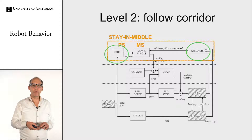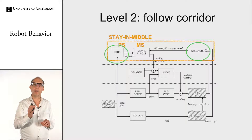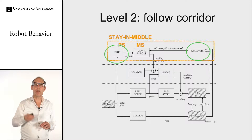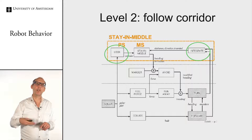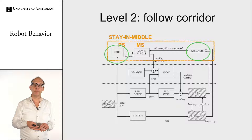On top of level one you can build level two — corridor following. There you still use the sonar to look for obstacles to the left and right, find the middle of the corridor, and give that as the preferred heading. This higher level has a little more intelligence because it integrates all sensor readings, transforming point measurements into lines, and in that way can determine the heading of the corridor.